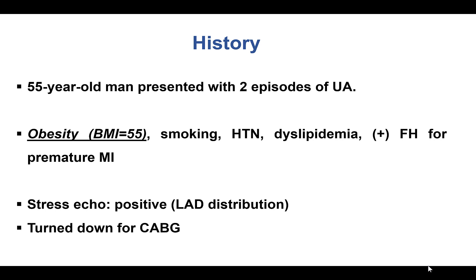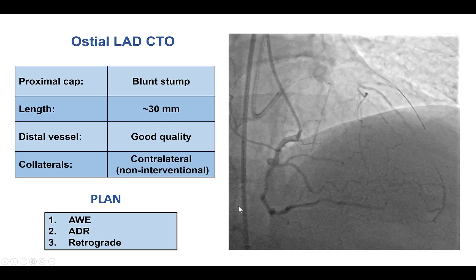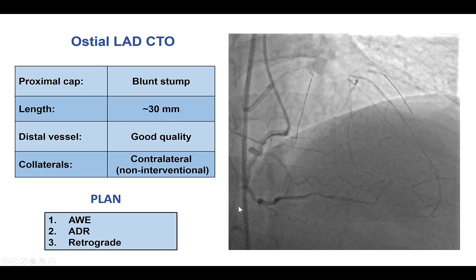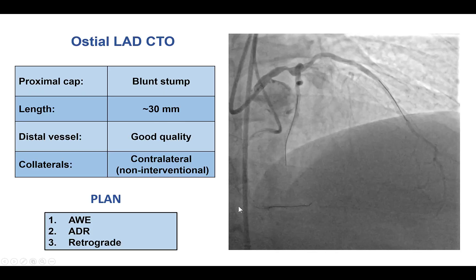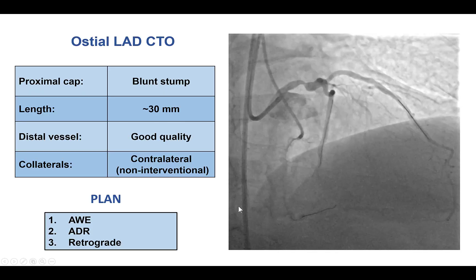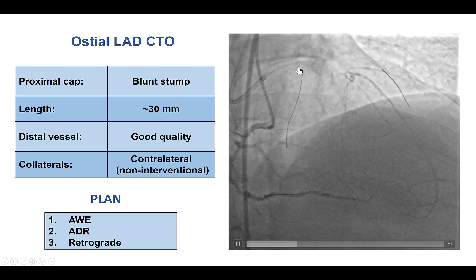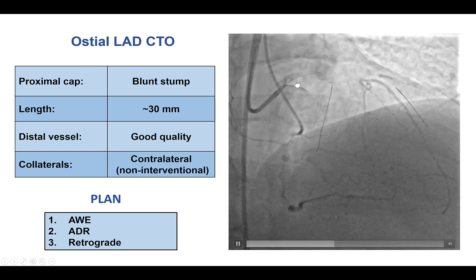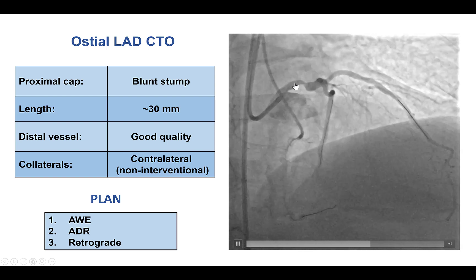The patient had morbid obesity and presented with unstable angina. He had a stress echo that showed ischemia in the LAD distribution and was turned down for bypass because of the obesity. He was afterwards referred for PCI of both an LAD CTO as well as a lesion in the left main.